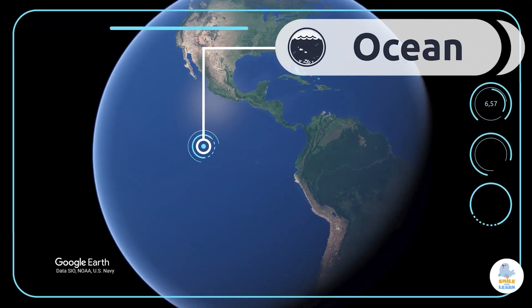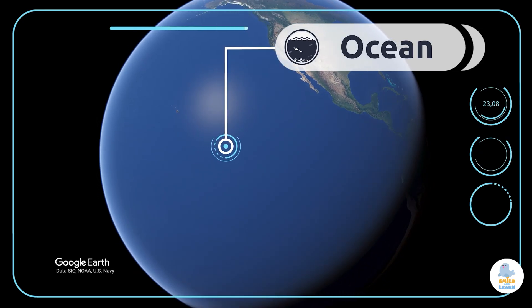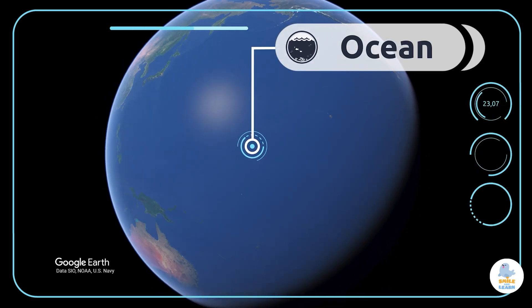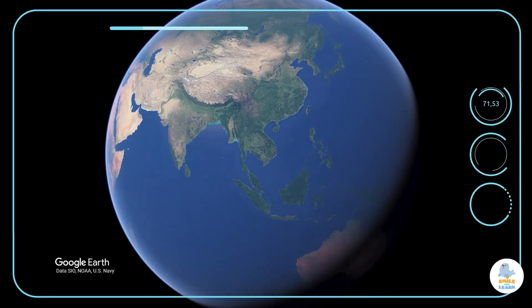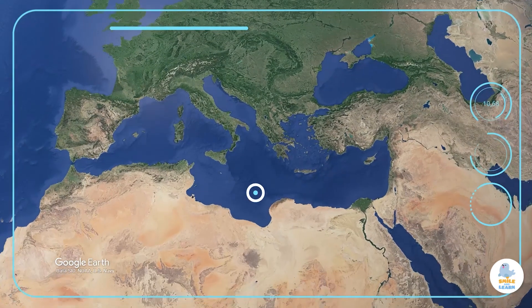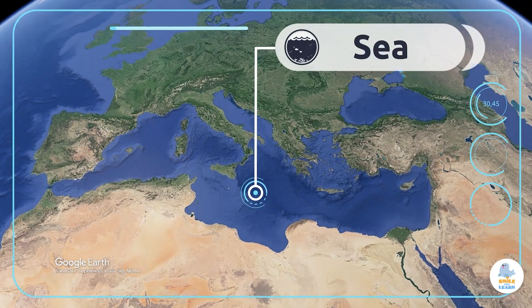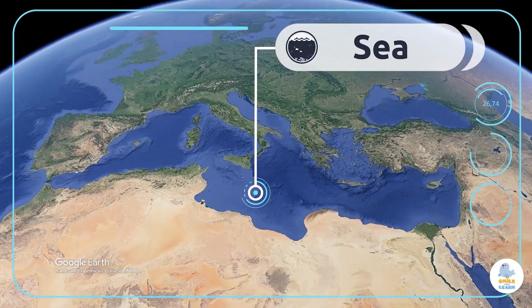Continents are surrounded by oceans and seas. This is the Pacific Ocean, and the Mediterranean Sea. Let's continue our journey.